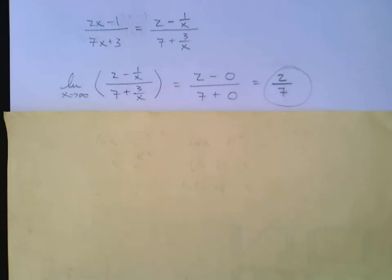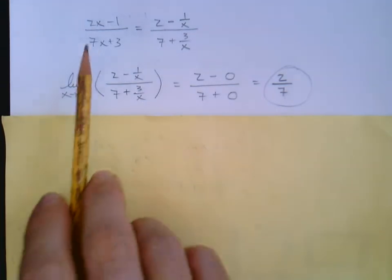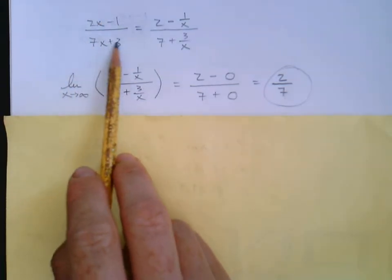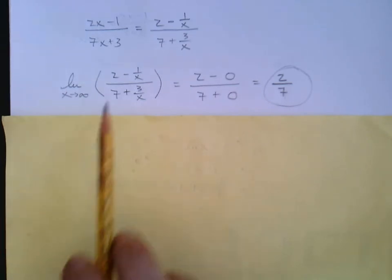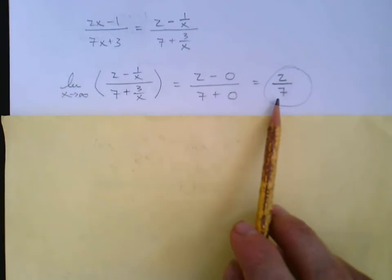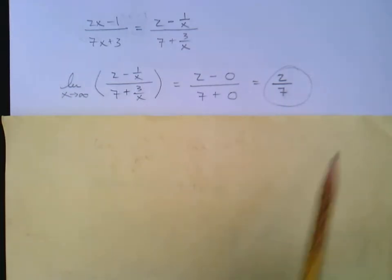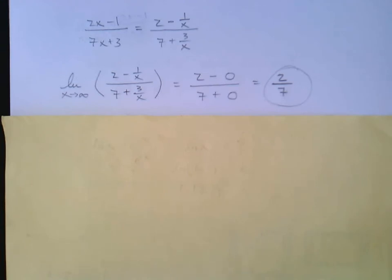What originally looked like infinity over infinity actually works out to be 2/7. You can verify this in Desmos — graph the function and you can see that as x goes off to infinity it levels off, tending towards the horizontal line y = 2/7.